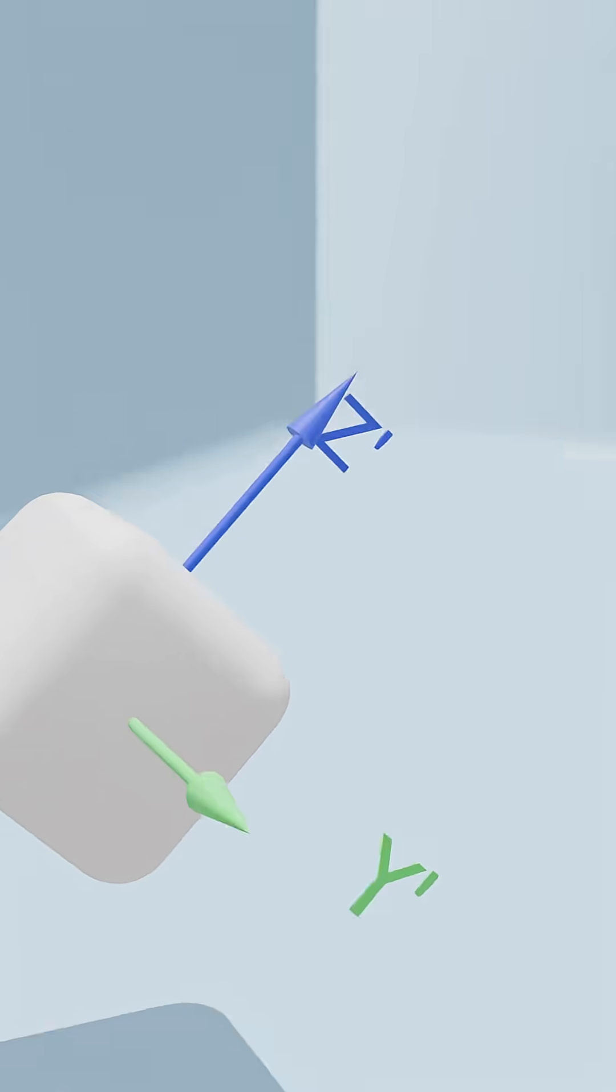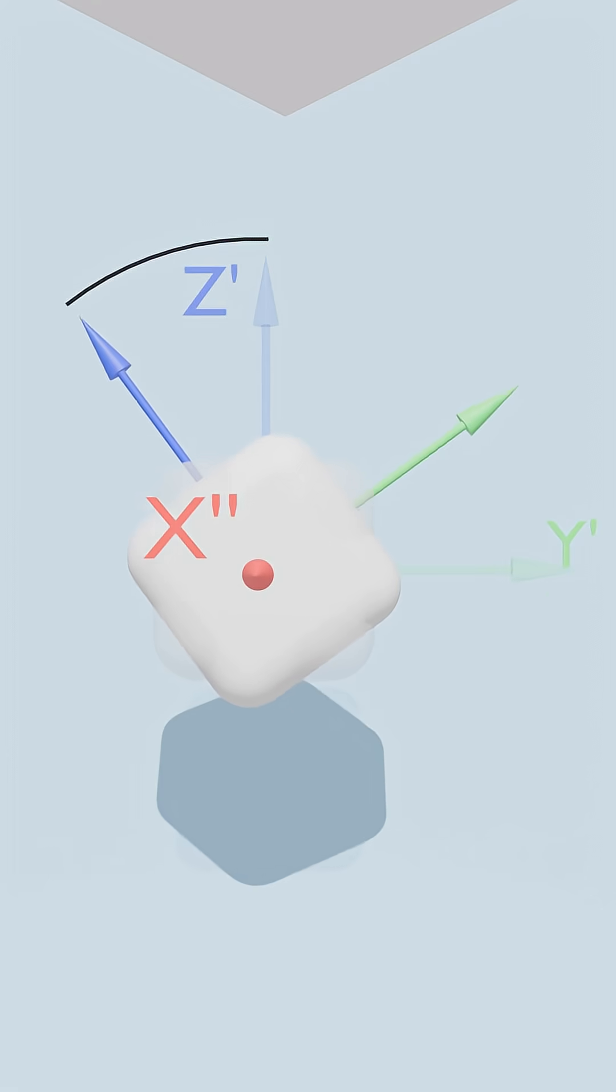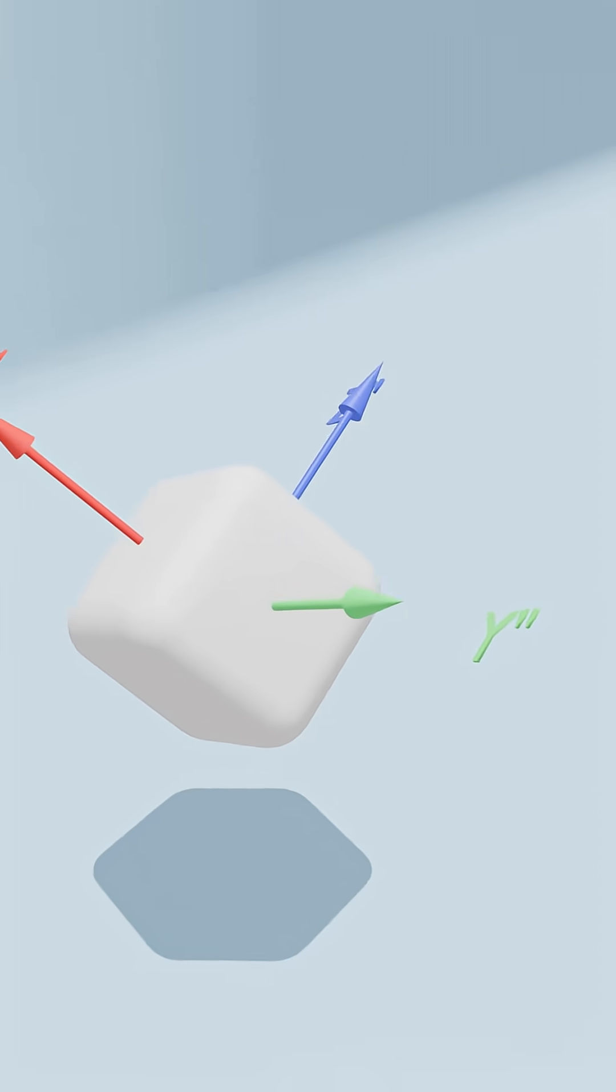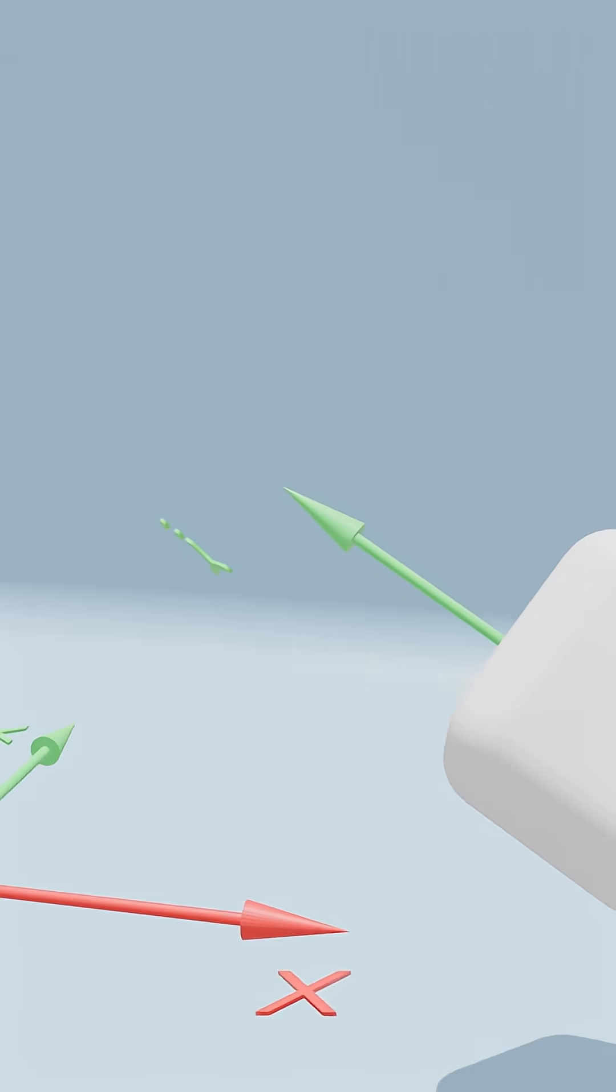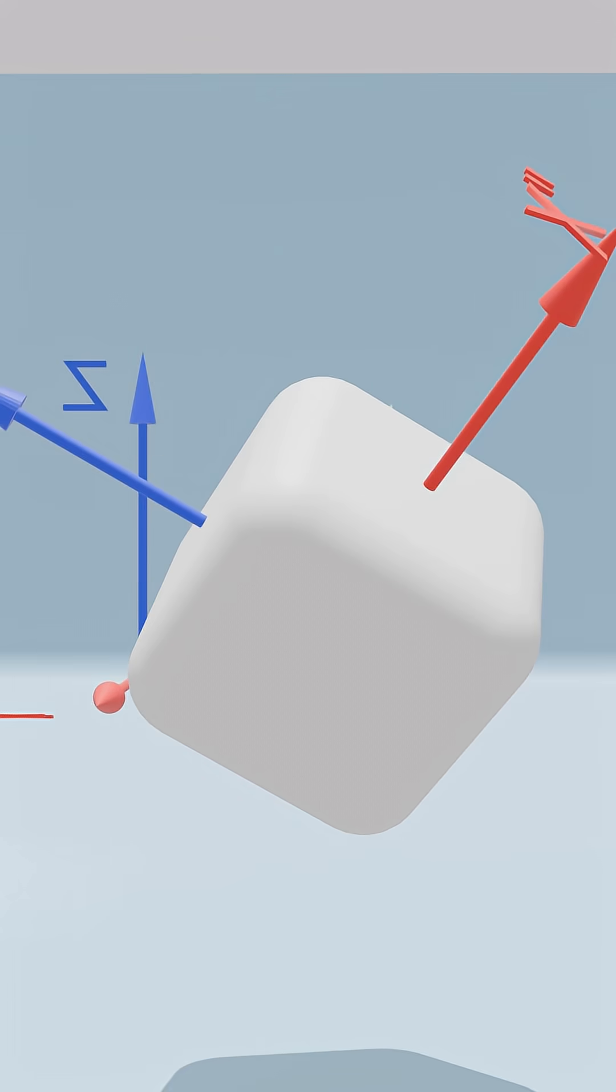Finally, we rotate the cube about the new x double prime axis by an angle phi. This rotation rotates the z prime and y prime axes to become our new final x double prime, y double prime, and z double prime axes. We now have represented our final orientation by breaking one complex rotation into three simple rotations with three angles.